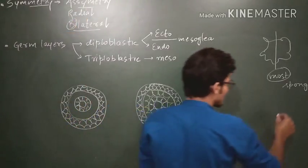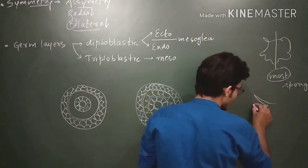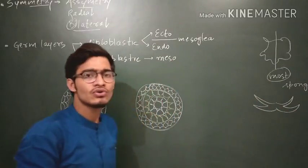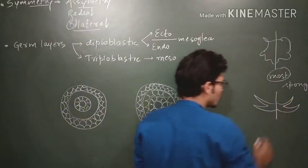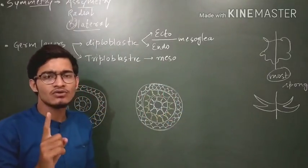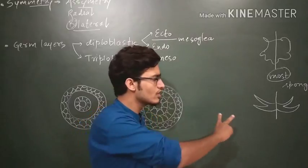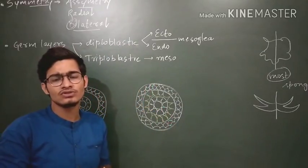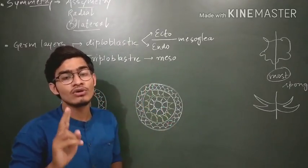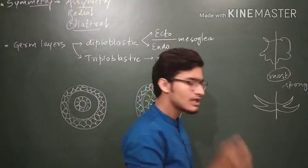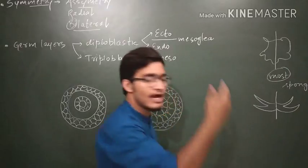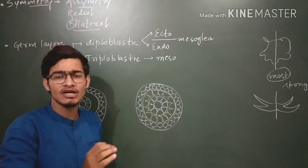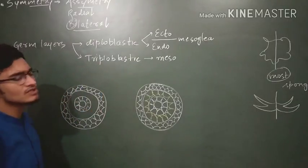Bilaterally symmetrical organisms can be divided into two equal halves only with the help of one plane. There cannot be any other plane passing through the center that can divide the individual into two equal halves. There is only a single plane passing through the center of mass that divides the individual into two equal halves. Most of the organisms are bilaterally symmetrical.